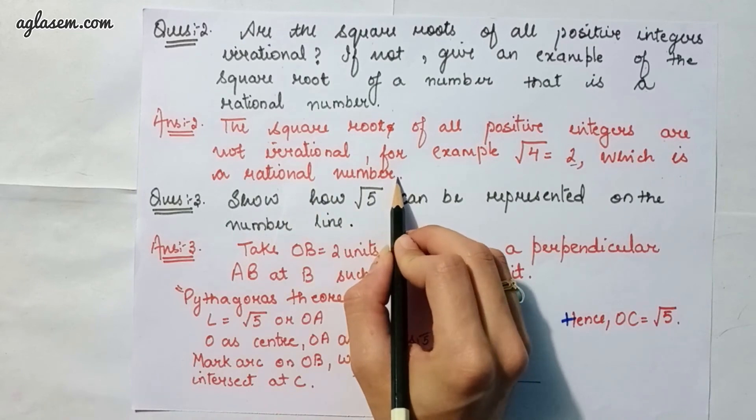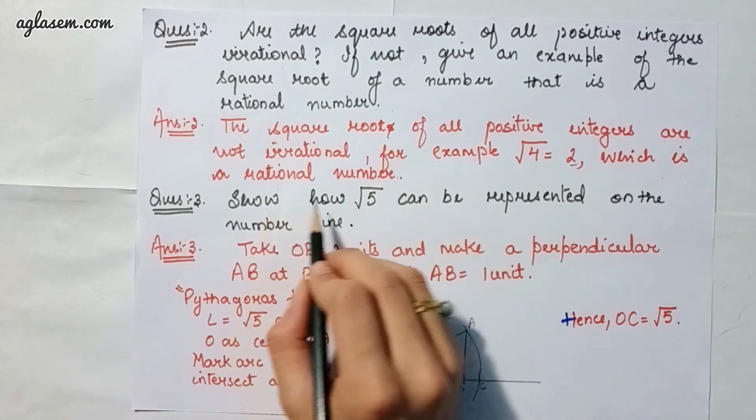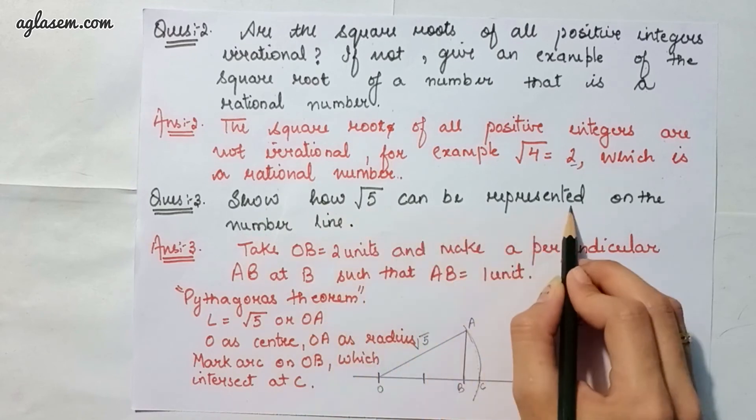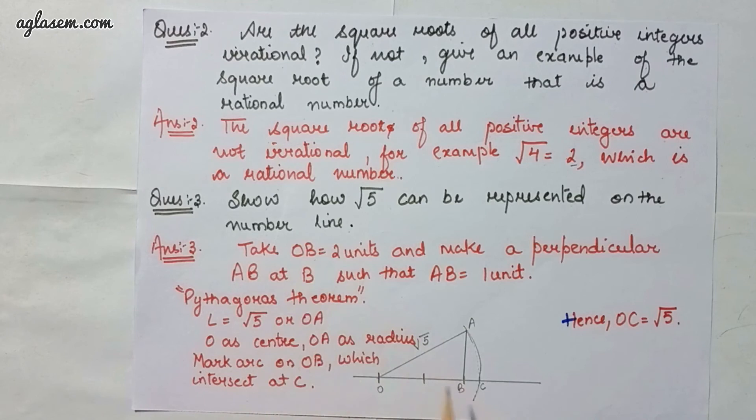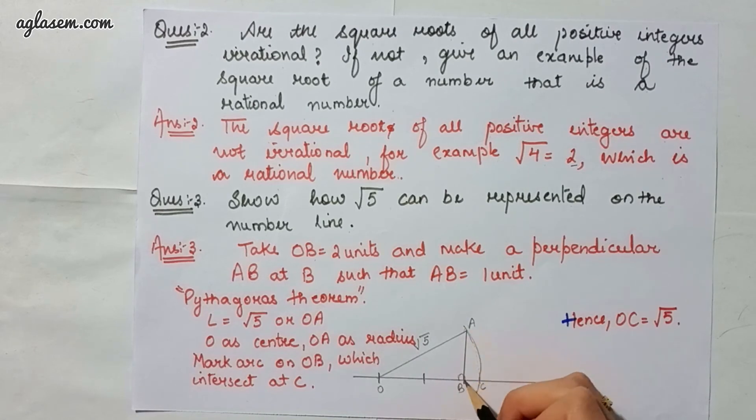Moving to the third and last question, which says show how root 5 can be represented on the number line. First of all, we have to take OB and make a perpendicular AB at B such that AB has one unit.